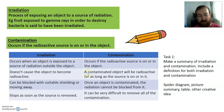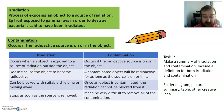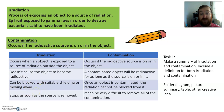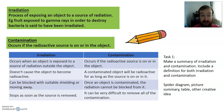I've got a little table that summarizes the two. Irradiation occurs when an object is exposed to a source of radiation outside the object. It doesn't cause the object to become radioactive. It can be blocked with a suitable screen or shielding. It's stopped as soon as the source is removed — as soon as you take away the source that's irradiating the thing, it stops.